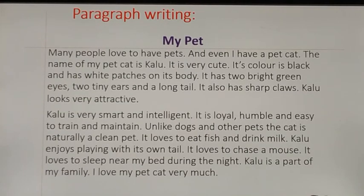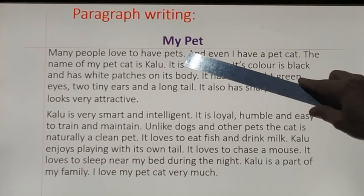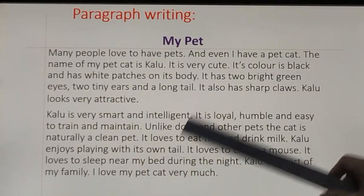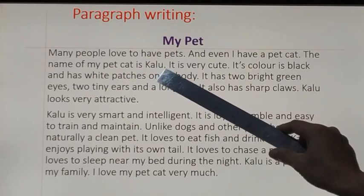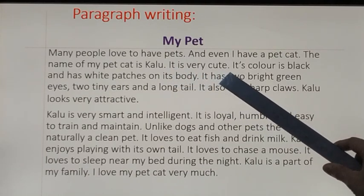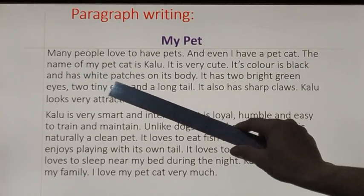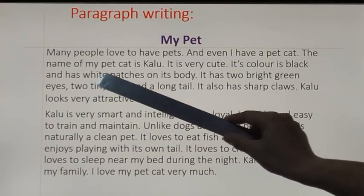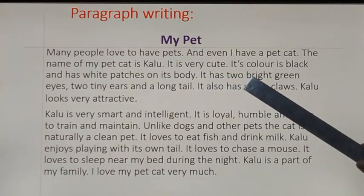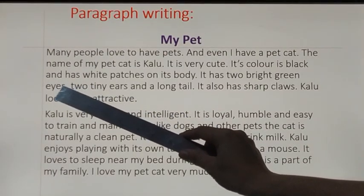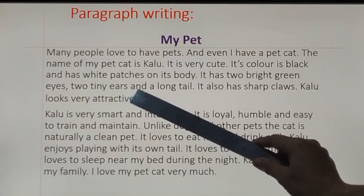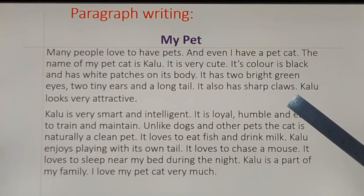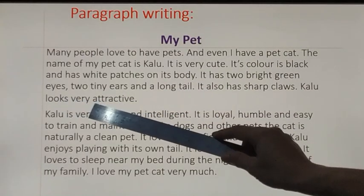Many people love to have pets and even I have a pet cat. The name of my pet cat is Kalu. It is very cute. Its color is black and has white patches on its body — Kalu is black in color and has white patches somewhere on the body. It has two bright green eyes, two tiny ears and a long tail. It also has sharp claws. Kalu looks very attractive.